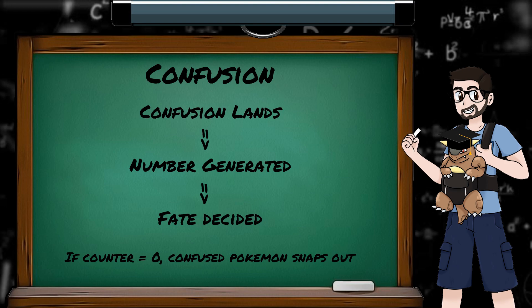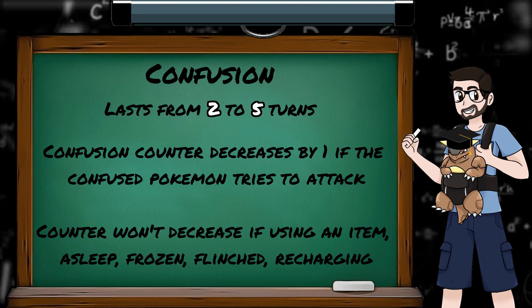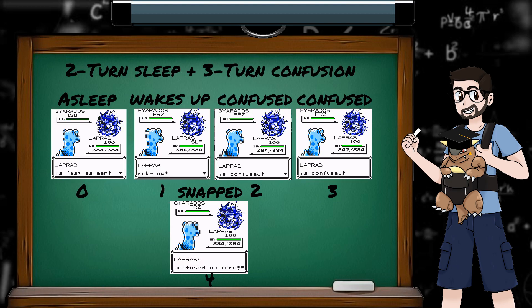Whereas sleep lasts from 1 to 7 turns, confusion lasts from 2 to 5. Like the sleep counter, the confusion counter will only decrease if the confused Pokemon attempts to attack. So again, using an item would not reduce the counter. The confusion counter has an additional caveat, in that it will not decrease if the confused Pokemon is asleep, frozen, suffers a flinch, or is recharging after using Hyper Beam. So if the Pokemon is asleep and confused, the confusion counter won't start ticking down until it wakes up.